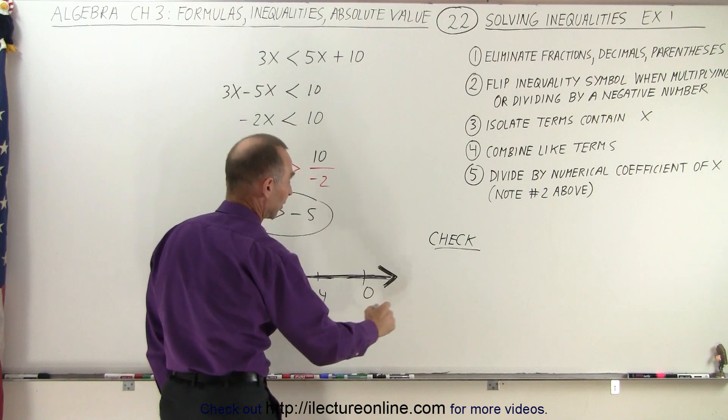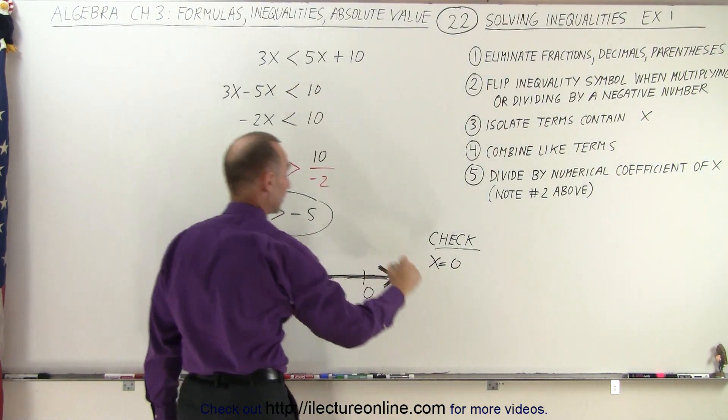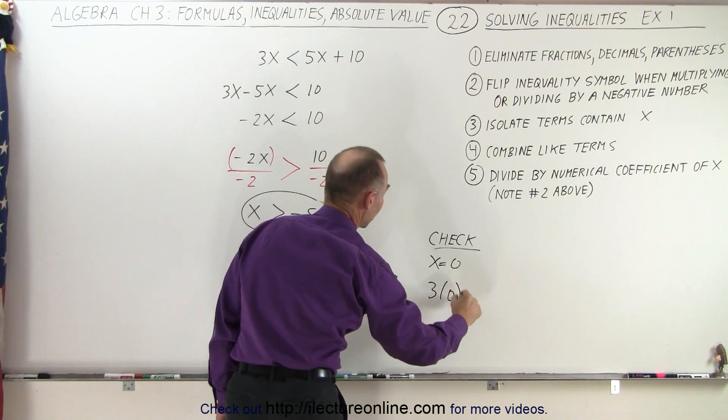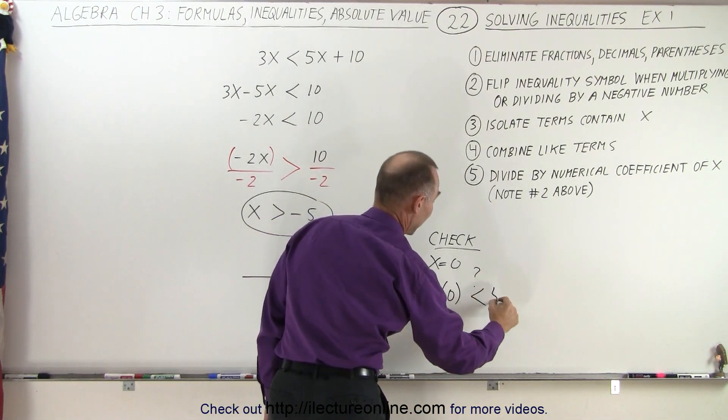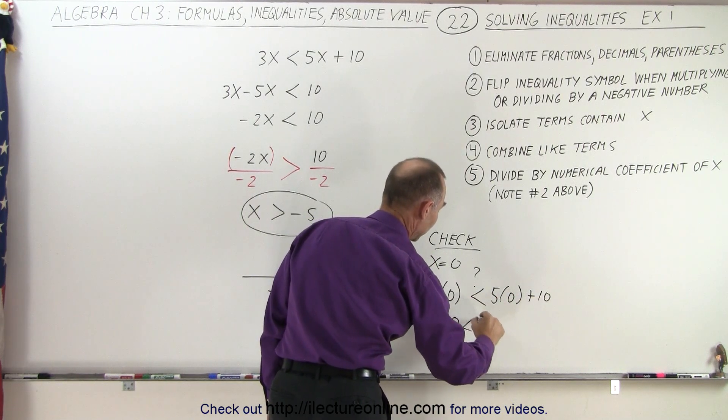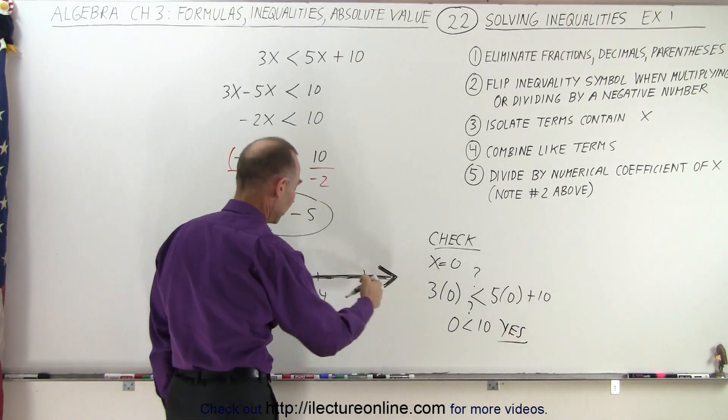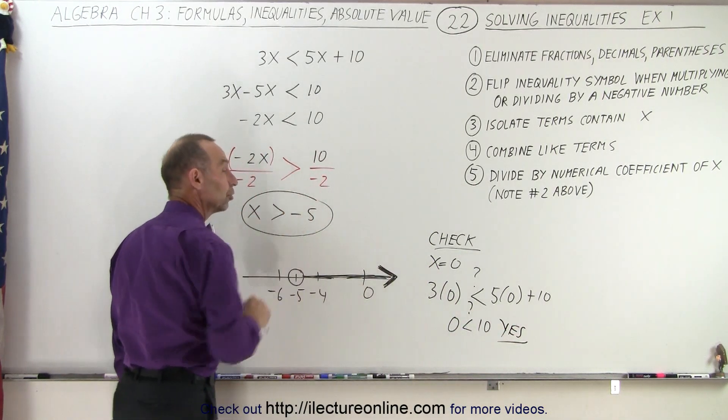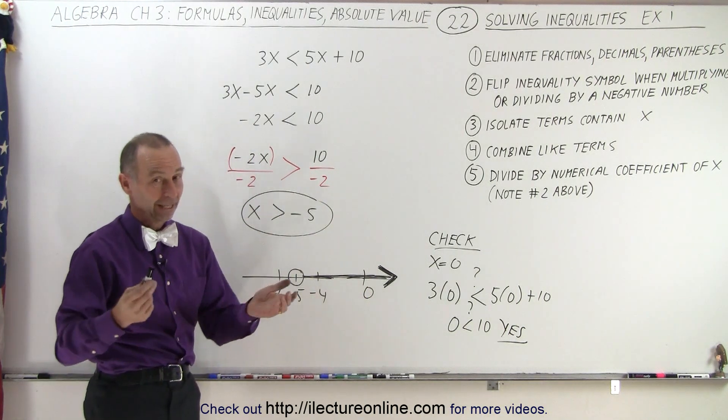So we're going to let x equals 0 because that's part of that range. Plug it in. 3 times 0. Is that less than 5 times 0 plus 10? Or is 0 less than 10? The answer is yes. And so we picked a point in the range that is part of the solution, and therefore we know that it satisfies the inequality, and that's how it's done.